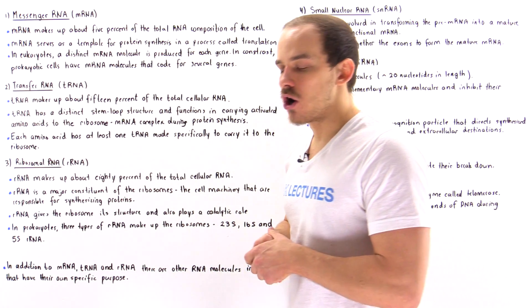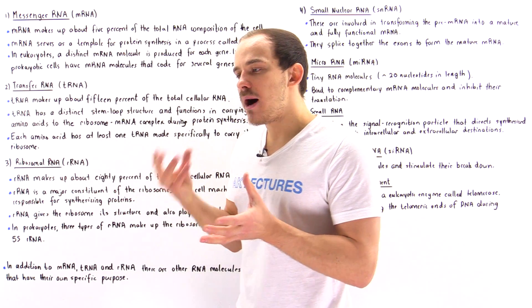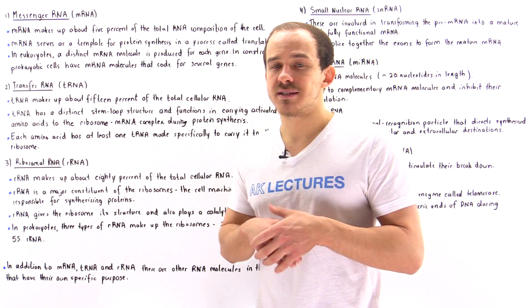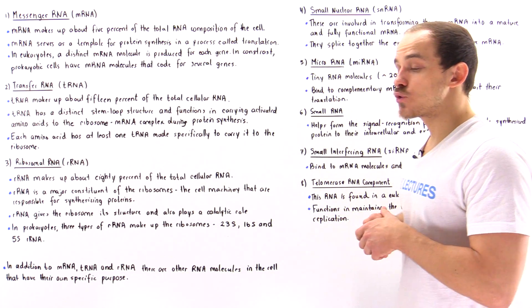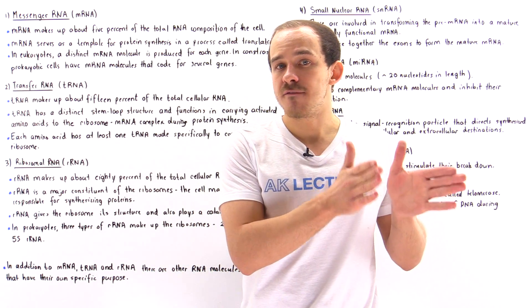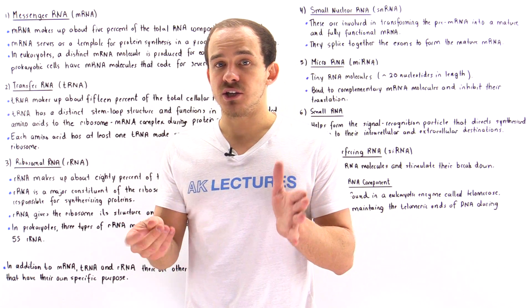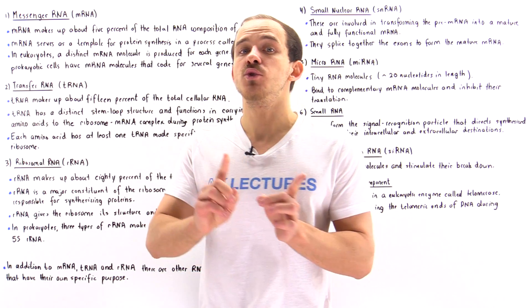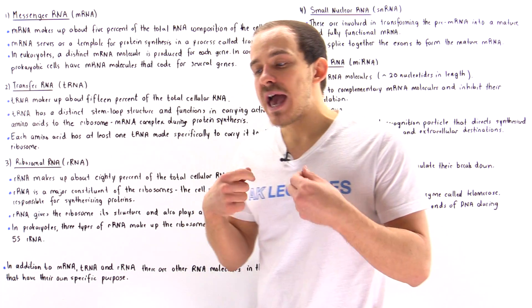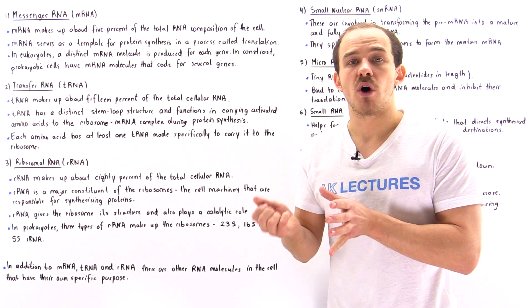Let's begin with messenger RNA. The messenger RNA molecule is basically the molecule that is eventually used by the ribosomes of our cells to synthesize the proteins, in a process known as translation. In prokaryotic cells, we take the DNA of that prokaryotic cell and then we transcribe the mRNA molecule. That mRNA molecule can then be used directly to synthesize the protein or proteins, and in prokaryotic cells the mRNA molecule can sometimes code for more than one protein.